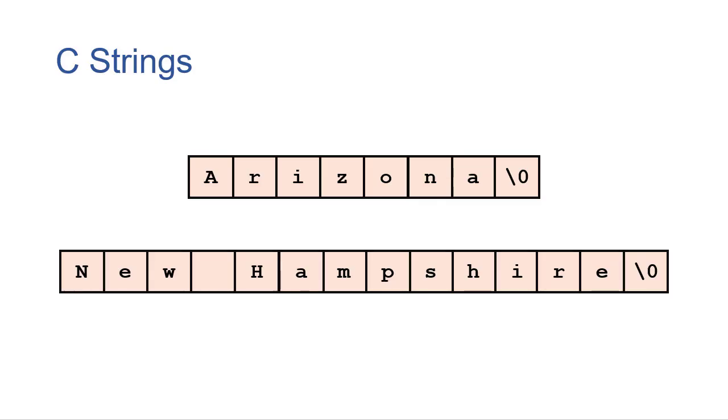So in C, there is no string type. Instead, we represent strings with character arrays with a null character at the end of the string. So here we have two strings, one Arizona, the other has New Hampshire in the name. And in each case, that string is ended by the null character. If that null character wasn't there, then the string would continue until it found a null character.